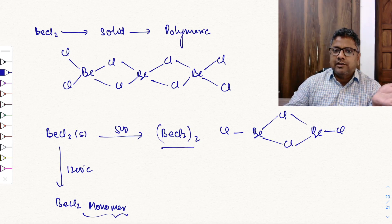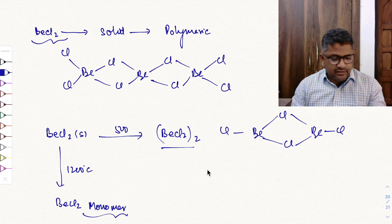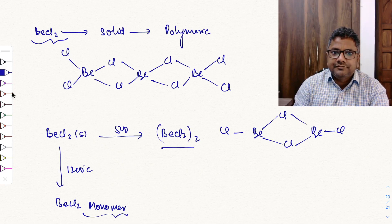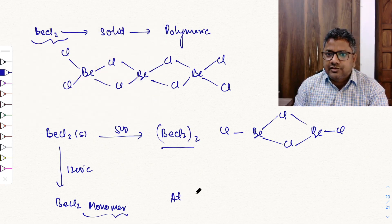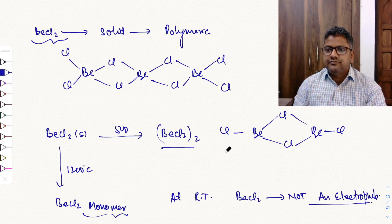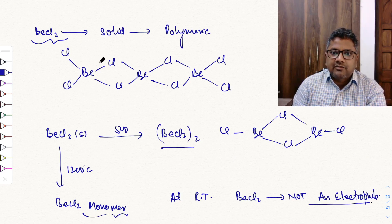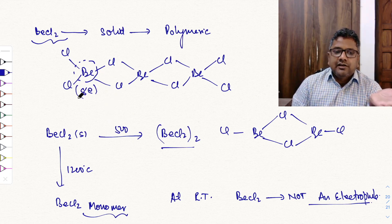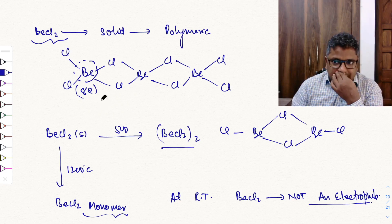At room temperature, BeCl2 does not act as a Lewis acid or electrophile. This is because in the polymeric form, beryllium has a full octet — counting the electrons: 2, 4, 6, 8 — eight electrons are present, so no vacant orbitals are available. Therefore, at room temperature BeCl2 is not an electrophile.